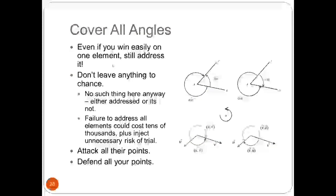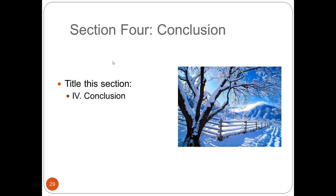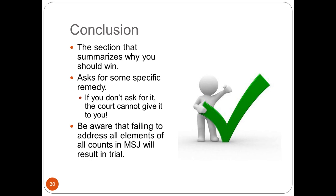After you get through the argument section, the last thing is the conclusion. This is Section 4 that you're going to include. It just summarizes everything, but critically you want to actually ask the court for what you want — if you don't ask for it, the court can't give it to you. For example: 'I hereby request the court dismiss this' or 'I hereby request judgment in my favor on all counts and damages of X, Y, and Z.' Also make sure that when you go to your conclusion, it's comprehensive and that you've actually covered every count and every element — otherwise you could end up with a trial on one claim you didn't mean to leave open.